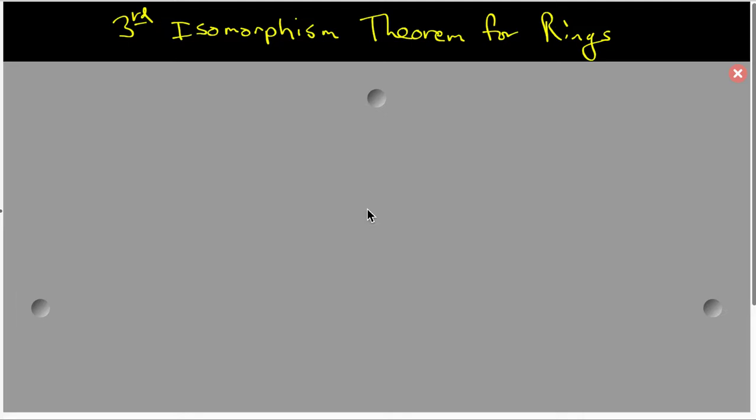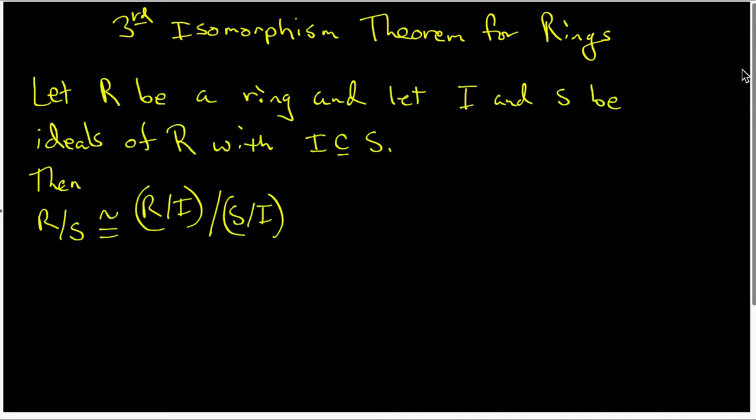In this video, I want to look at the third isomorphism theorem for rings. We're going to start by looking at the statement of the theorem. The theorem says that if we let R be a ring and we let I and S be ideals of R with I as a subset of S, then the quotient ring R mod S is isomorphic to the quotient ring R mod I modded out by S mod I.